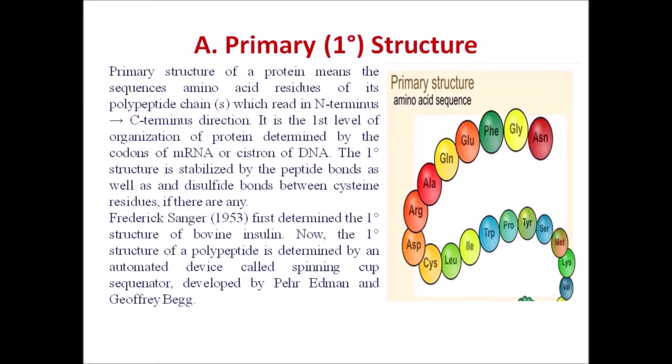Primary structure of a protein means the sequence of amino acid residues of each polypeptide chain, read in the N-terminus to C-terminus direction. It is the first level of organization of protein, determined by the codons of mRNA or cistron of DNA.